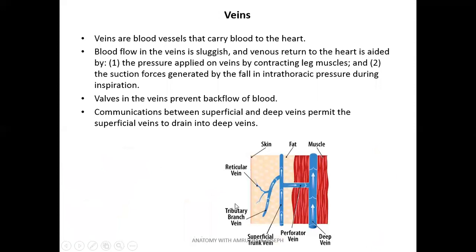Veins carry deoxygenated blood from the periphery to the heart. Blood flow in the veins is sluggish compared to arteries, because in arteries blood flows with pressure generated by the heart, whereas in veins the pressure is very minimal. There are several factors that help venous return; I will discuss two of them.